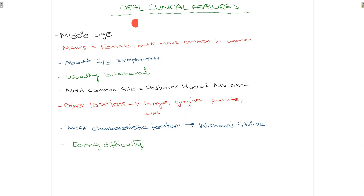Talking about the clinical features of oral lichen planus: firstly, it affects middle-aged individuals. Although it affects males and females in an equal ratio, it is more commonly found in women. Symptoms appear in about two-thirds of patients. Oral lichen planus most commonly presents bilaterally — for example, if it affects the left buccal mucosa it will affect the right buccal mucosa as well. The most common site is the posterior buccal mucosa, but other locations include the tongue, gingiva, palate, and lips.